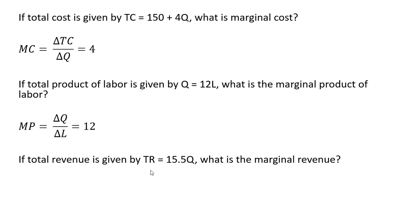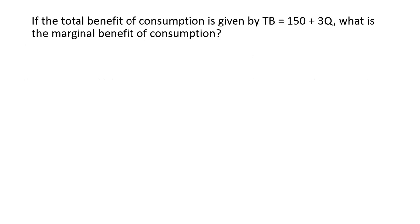If total revenue is given by 15.5q, the a term is 0, so the vertical intercept occurs at the origin. The slope — or marginal revenue — is 15.5. Every time we produce one more unit, total revenue goes up by $15.50. And if total benefit of consumption is given by tb equals 150 plus 3q, marginal benefit is just the change in total benefit over the change in consumption, which is the b parameter: 3. That's it — I hope you found this video helpful.